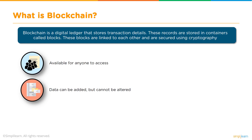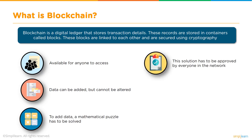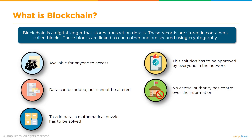That inability to alter information is called its immutability feature. To add any data, a typical mathematical puzzle has to be solved by the validators of the network, the so-called miners, in order to maintain the sanity of the network, and in lieu they receive a reward. The solution has to be approved by everyone in the network. There is no central authority controlling the information, making blockchain a democratic network. The privacy of all users is maintained by cryptography, and transactions on the blockchain network are encrypted.